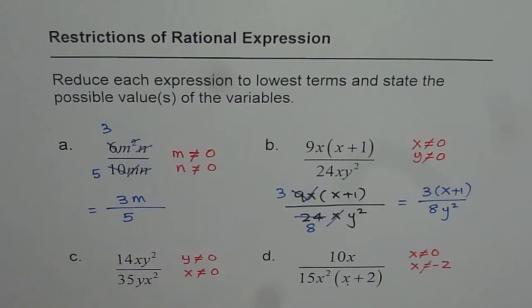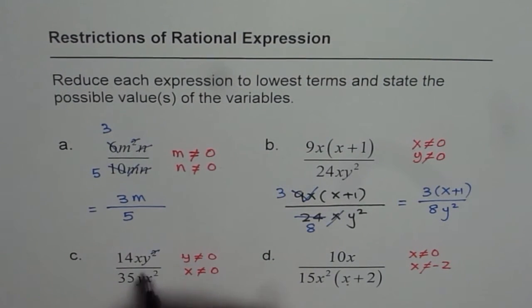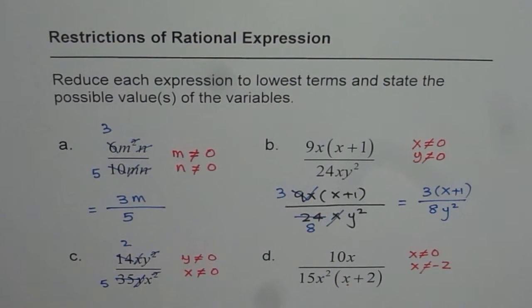In this particular case, you can cancel the Y's, we can cancel the X. And 14 and 35, both can be divided by 7. 7 times 2 and 7 times 5. With that, you can write down your answer.